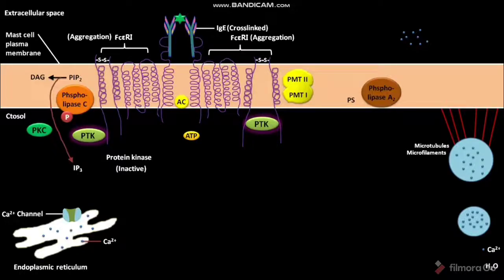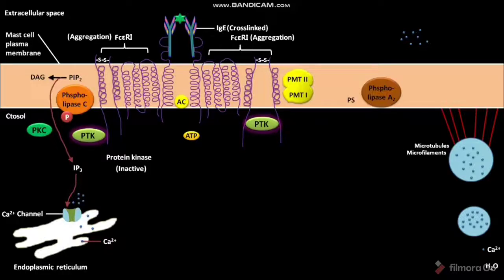The IP3 stimulates the calcium ion channels on the endoplasmic reticulum. As a result, the calcium ion channels get opened. Through these opened calcium ion channels, the luminal calcium ions reach the cytosol of the sensitized mast cell.